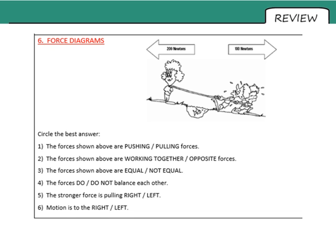So the forces shown above are pushing or pulling forces. Well, once again, they are both pulling forces. The forces shown are working together or in opposition to each other. They are opposite to each other because they're working in opposite directions. The forces shown above are equal or not equal. One's two hundred and one's one hundred. So they are not equal. The forces do balance each other or do not balance each other. Well, since they are not equal, they do not balance each other. The stronger force is pulling right or left. Well, two hundred newtons to the left, one hundred to the right. So the stronger force is pulling left. And therefore, motion is to the right or left while it will move in the direction of the strongest force. So left.